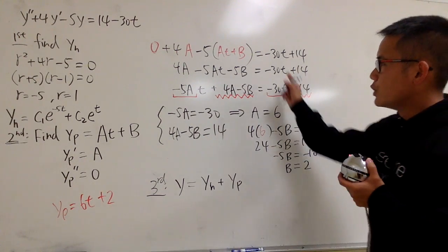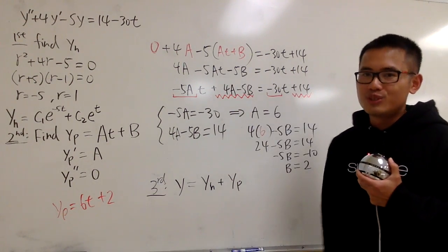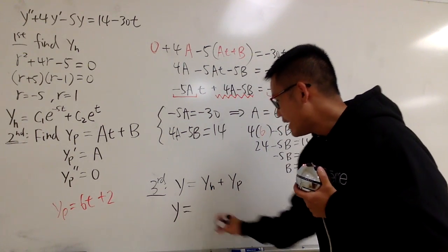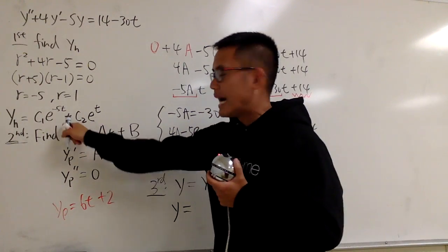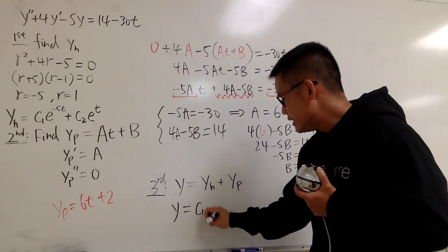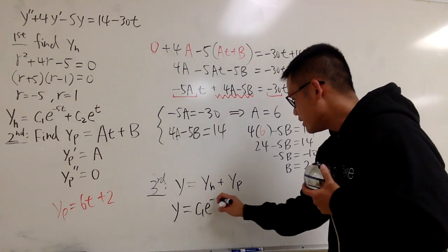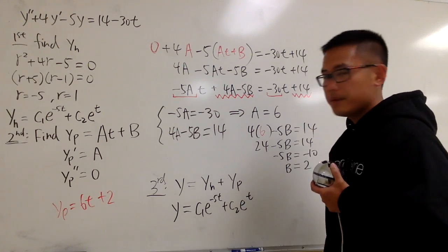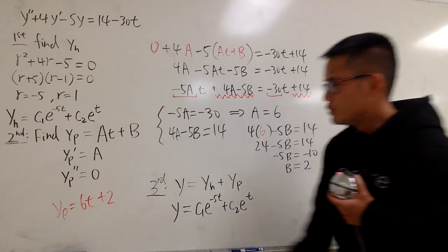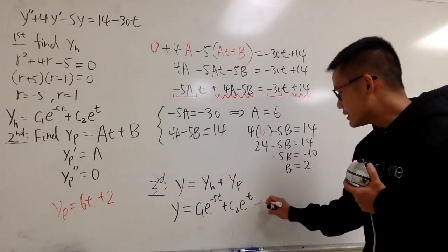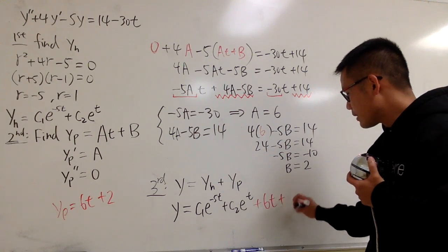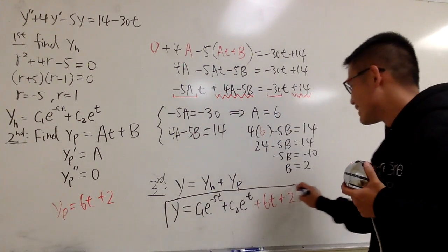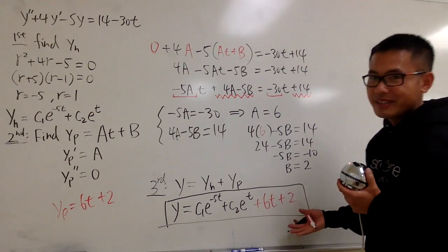And for the particular, we use the undetermined coefficient to do that. Anyways, y is just y, and then yh is that, so I'll just put it down. c1 e to the negative 5t plus c2 e to the t. And then for yp, which is that, so I'll just add it with, plus 6t plus 2. Ta-da! This is the answer for it. Okay, not so bad, right?